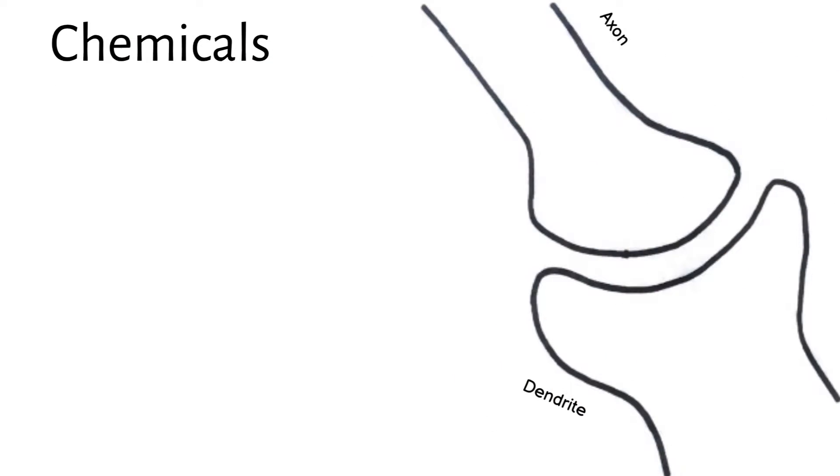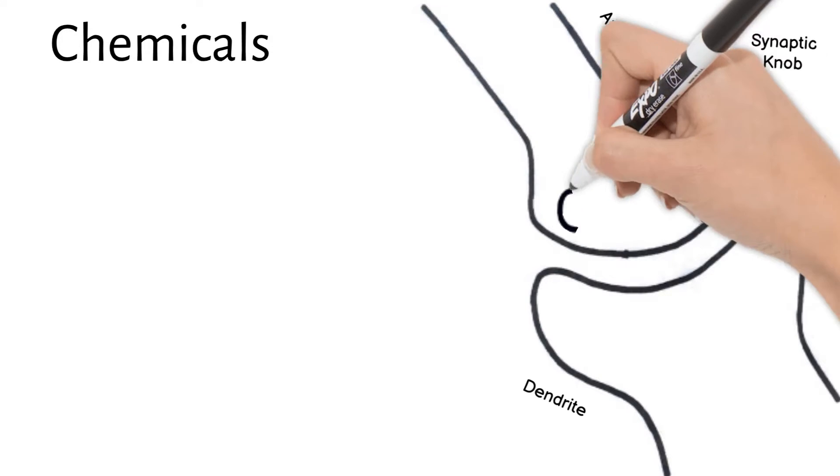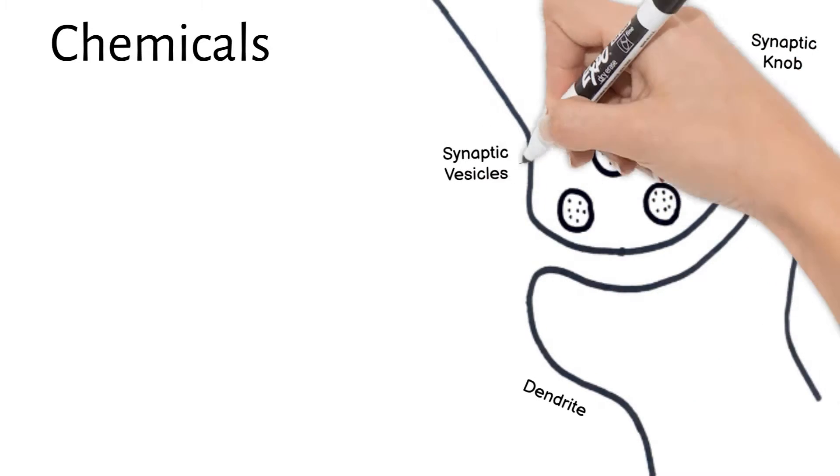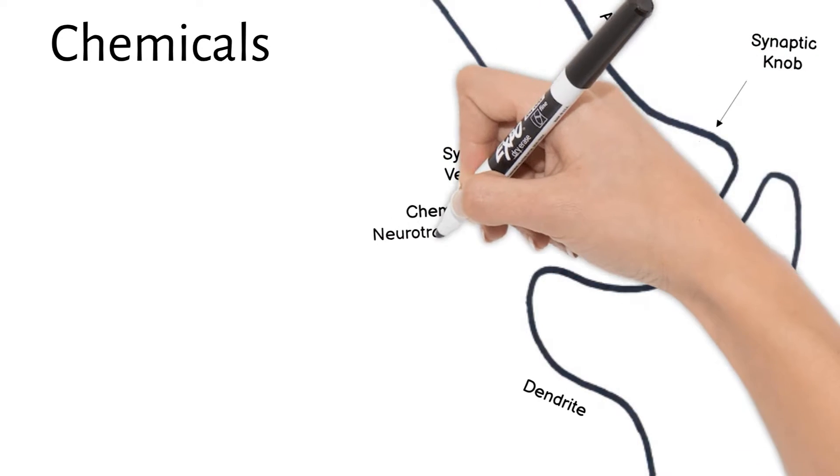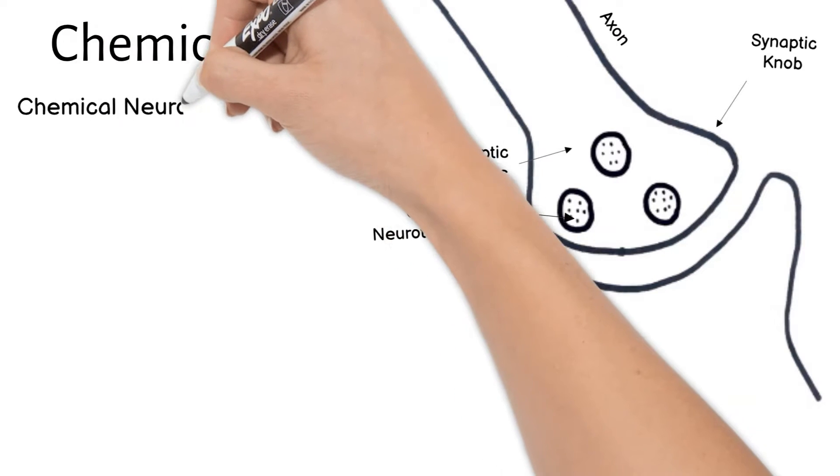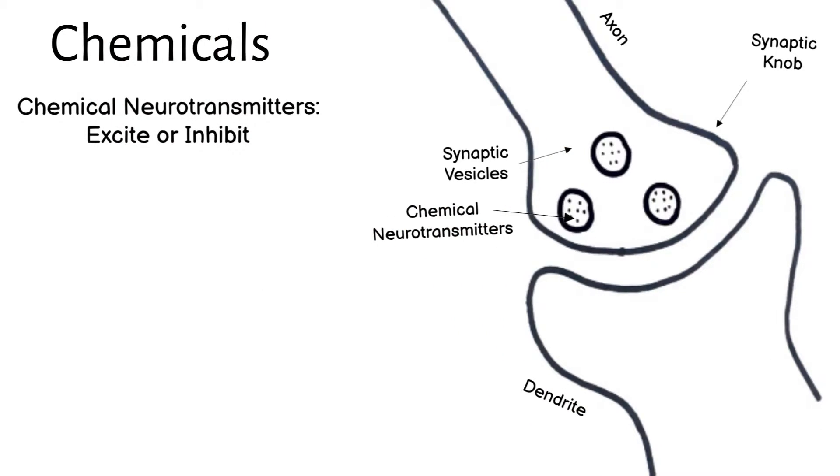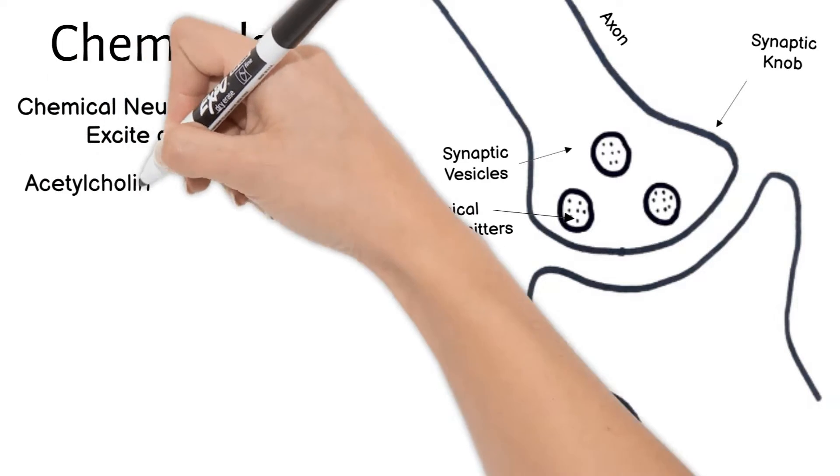Most neurons use chemicals to pass the message across the synapse, and that is what we'll look at today. The end of an axon is called the synaptic knob and contains synaptic vesicles inside. These vesicles contain chemical neurotransmitters, which can either excite or inhibit a neuron. The most common neurotransmitter in these synaptic vesicles is acetylcholine.